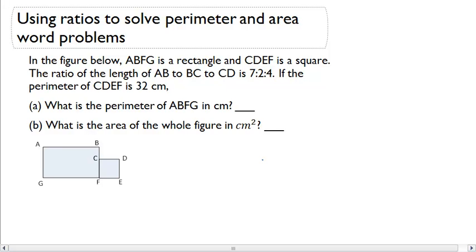The ratio of the length of AB to BC to CD is 7 to 2 to 4. If the perimeter of CDEF is 32 centimeters, what is the perimeter of ABFG in centimeters? And what is the area of the whole figure in centimeters squared?